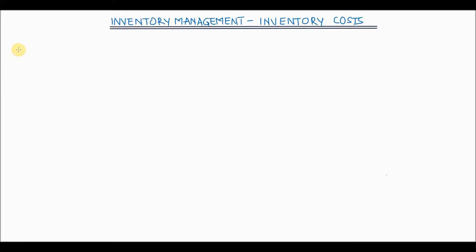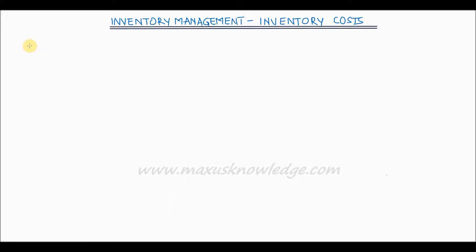Welcome to another video in the series on inventory management. In this video we will look at the various aspects of inventory costs. In making any decision with respect to inventory, different types of costs should be taken into consideration. These costs are typically in conflict with each other, therefore while making inventory decisions to minimize the total inventory cost of the system, all the costs must be considered in parallel.